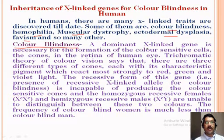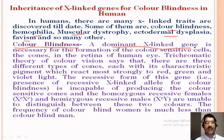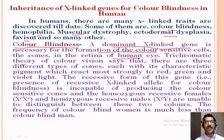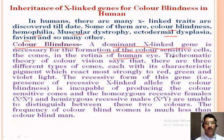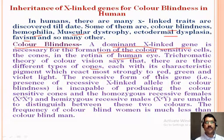So why does this happen? The dominant X-linked gene is responsible. If a person lacks the dominant X-linked gene responsible for the formation of color-sensitive cells, or cones, in the retina of the human eye, color blindness results. The trichromatic theory of color vision says there are three different types of cones, each with a characteristic pigment that reacts more strongly with red, green, and violet light.